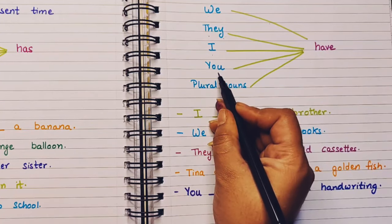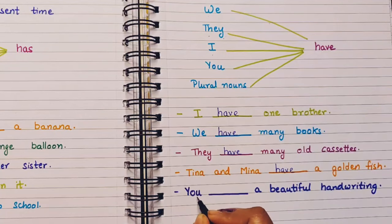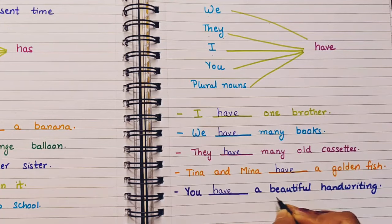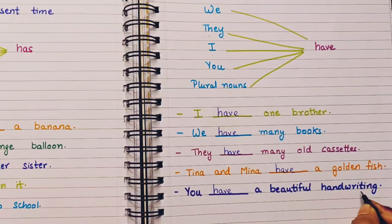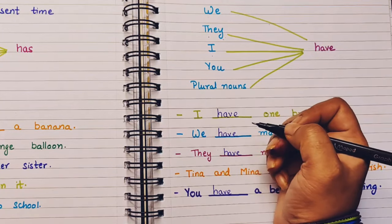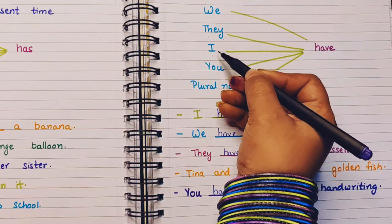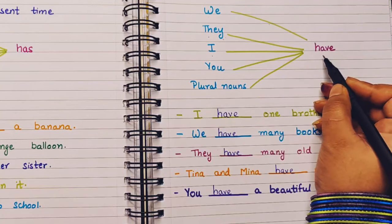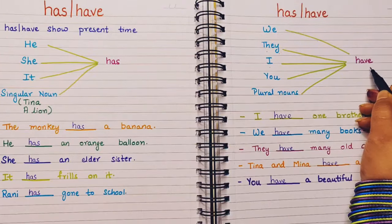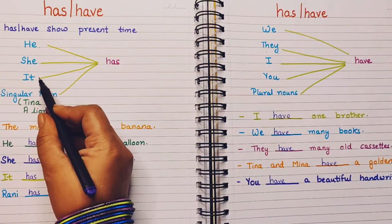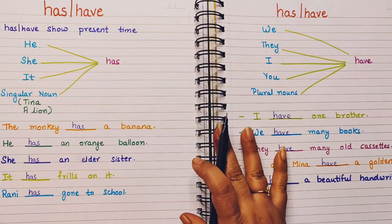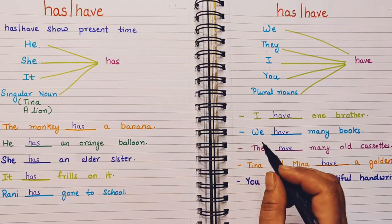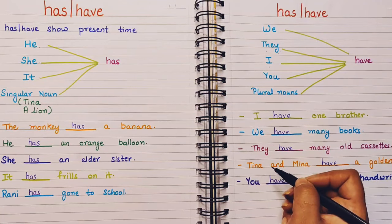You — dash — a beautiful handwriting. With you, we also use have. So: you have a beautiful handwriting. We cannot say you has — that is a wrong sentence. So remember: when in a sentence we have we, they, I, you, or any plural nouns, we always write have with them. And when we have he, she, it, or any singular noun, then we use has. Both has and have are always used in the present time.